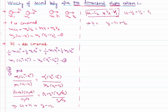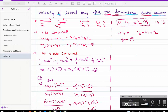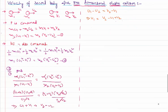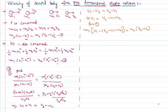Substituting this value of v1 into equation number one: m1(u1 − v1) = m2(v2 − u2). Replacing v1 with (v2 − u1 + u2), I get m1 of (u1 − (v2 − u1 + u2)) = m2(v2 − u2). Rearranging: m1(u1 − v2 + u1 − u2) = m2(v2 − u2), which gives m1(2u1 − u2 − v2) = m2(v2 − u2).